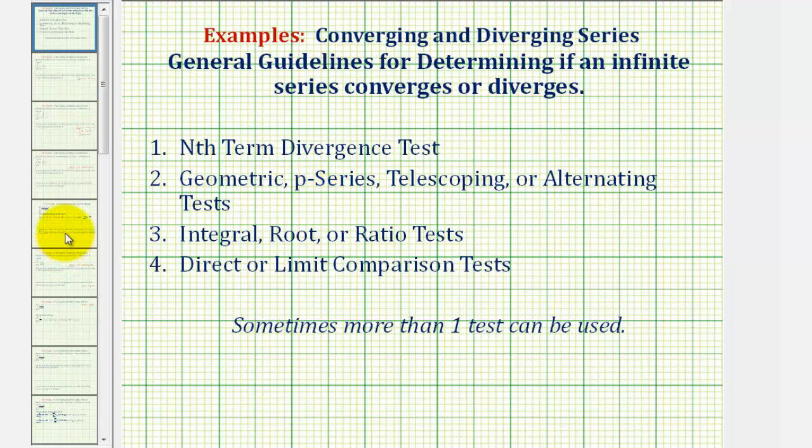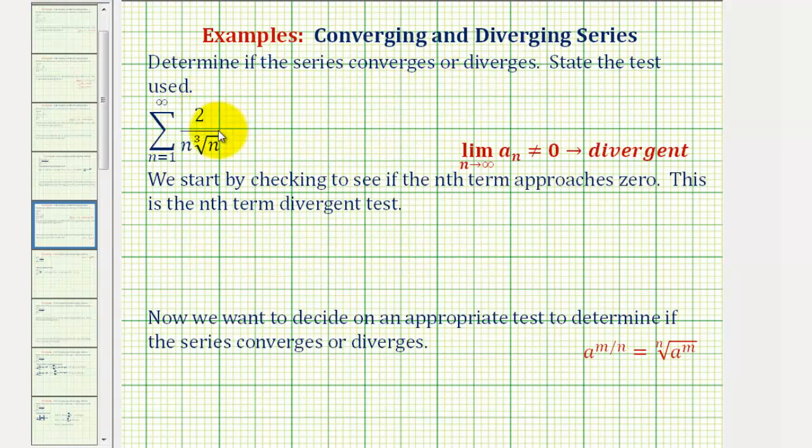Let's take a look at our example. We want to determine if the given series converges or diverges and state the test used. Typically, we want to start with the nth term divergent test, which is a test to see if the nth term approaches zero.